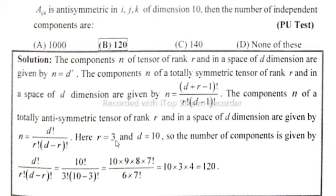Here rank is equal to 3 and dimension is equal to 10. By substitution the values in formula, d is equal to 10. So, 10 factorial divided by rank 3, 3 factorial into 10 minus 3 factorial is equal to 7 factorial.